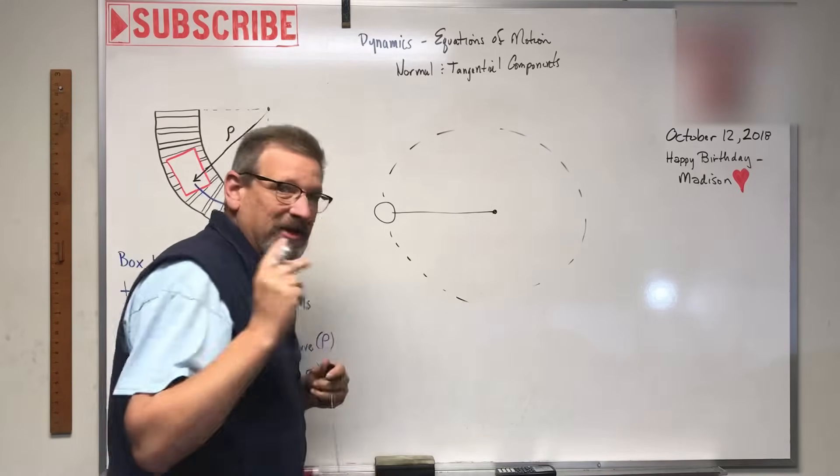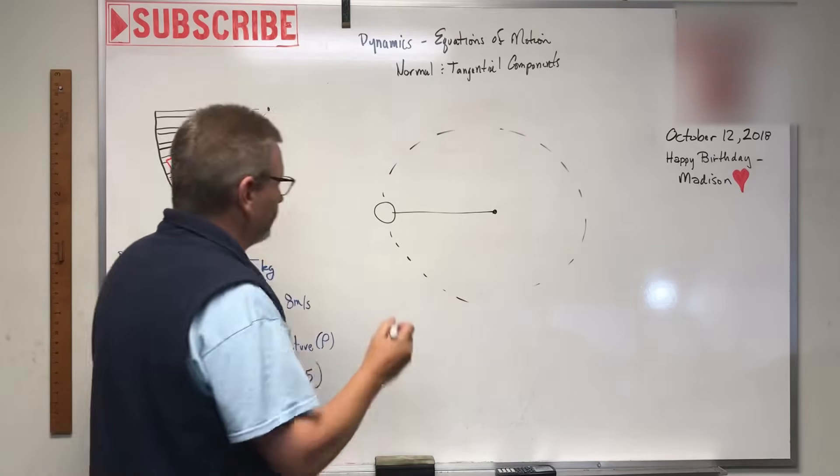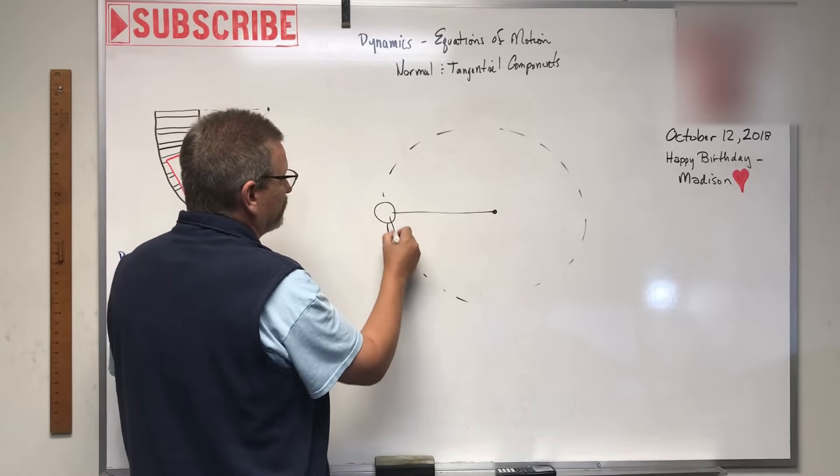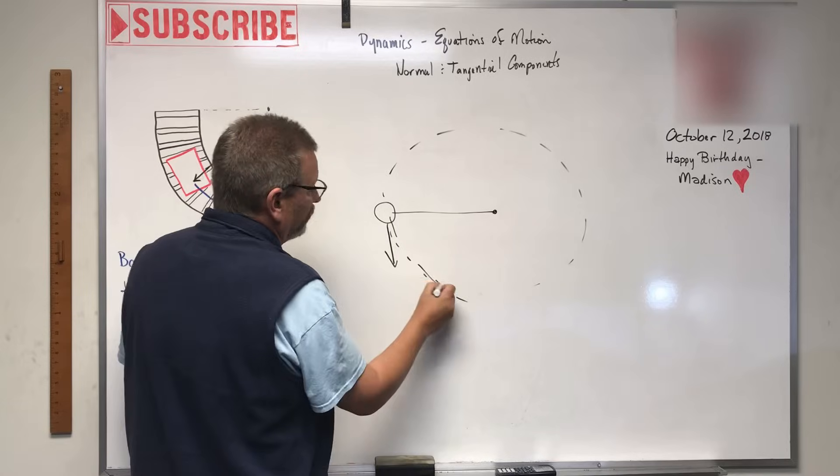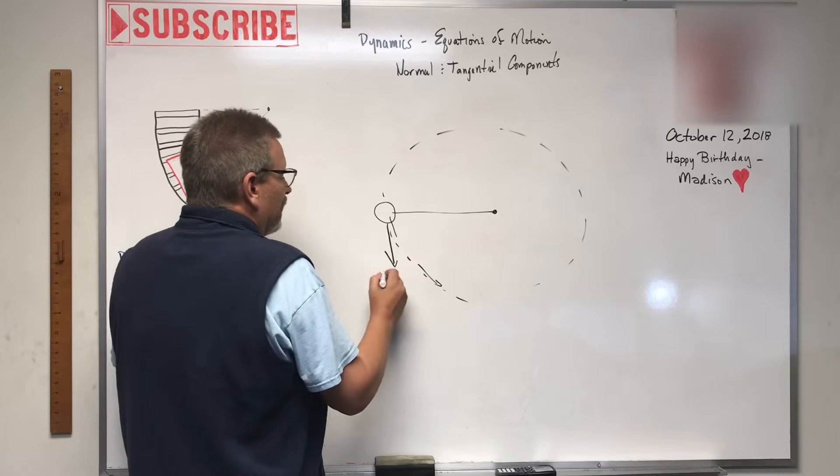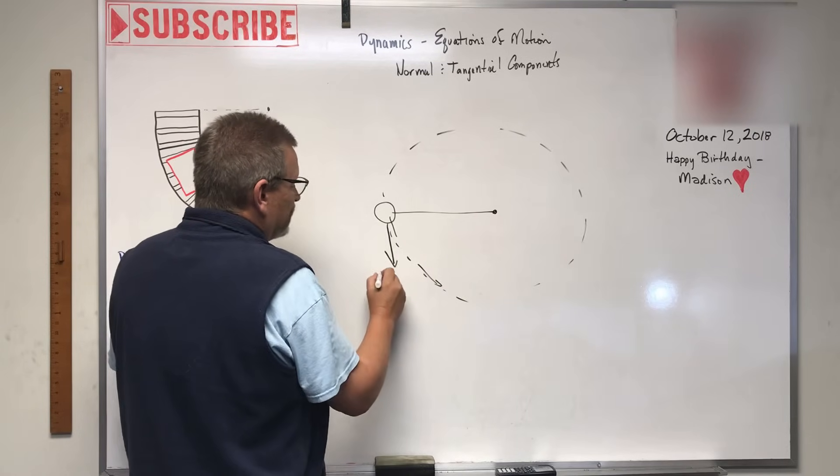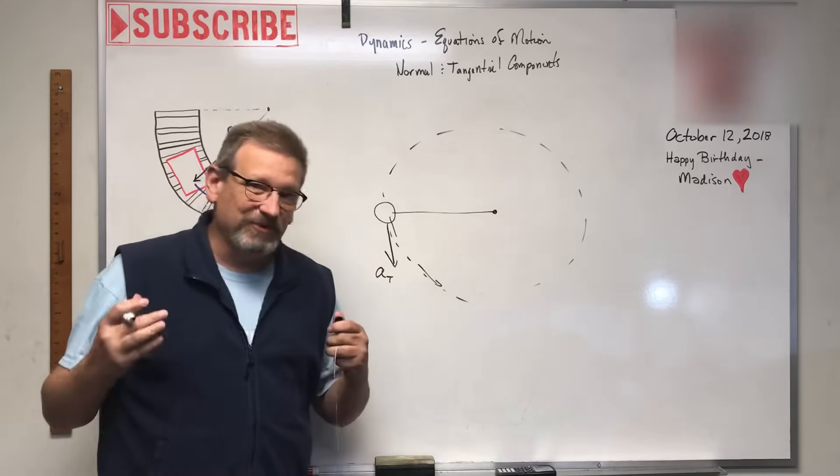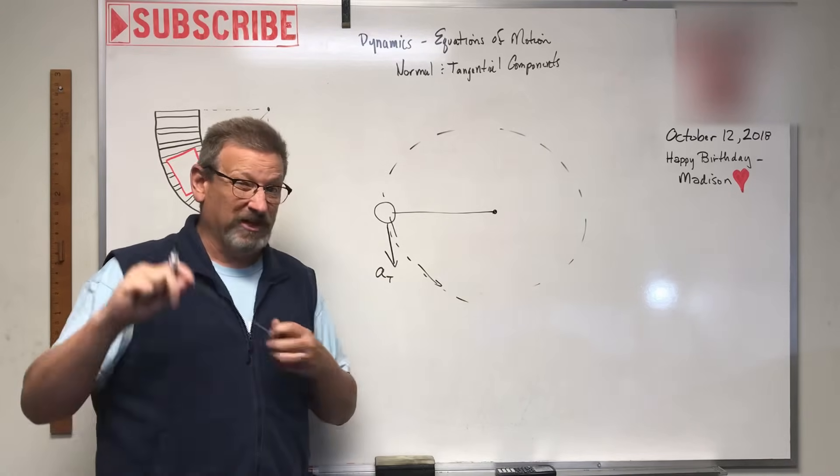There are two kinds of acceleration here on the ball. Number one, assuming this is the direction of travel, this guy is tangential to the path. We call that a_t. If a problem gives you the acceleration of an object going around the path, that acceleration will be your tangential acceleration.